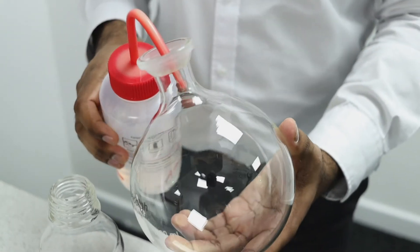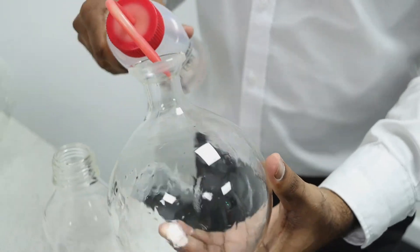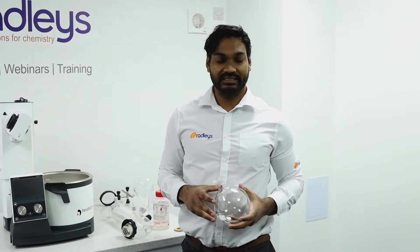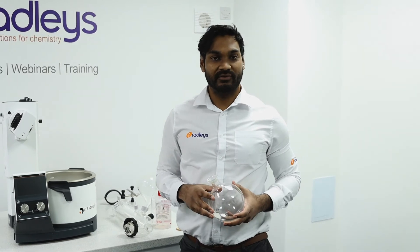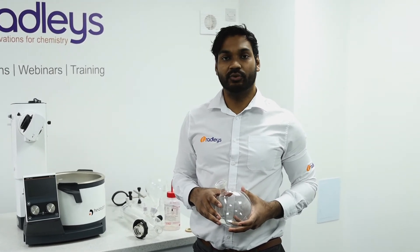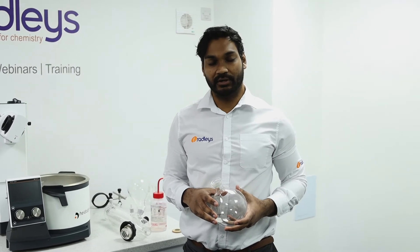Then you can give your collection flask a clean by rinsing it out with some acetone. We recommend that you clean your condenser and your waste trap every time you evaporate a different batch of materials to ensure that there is no cross contamination between your compounds.